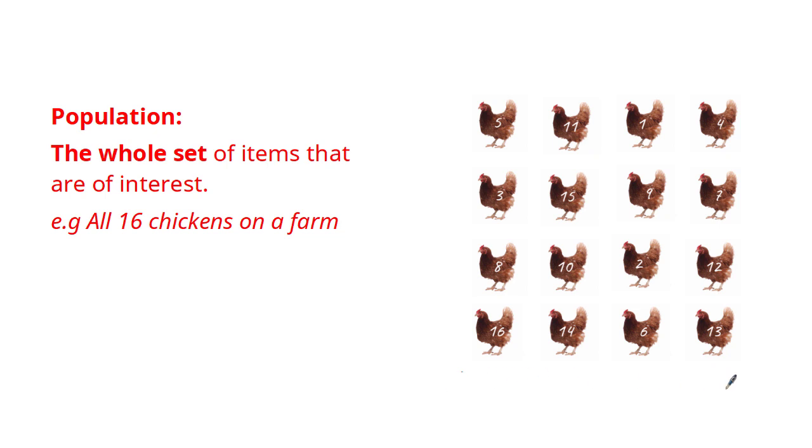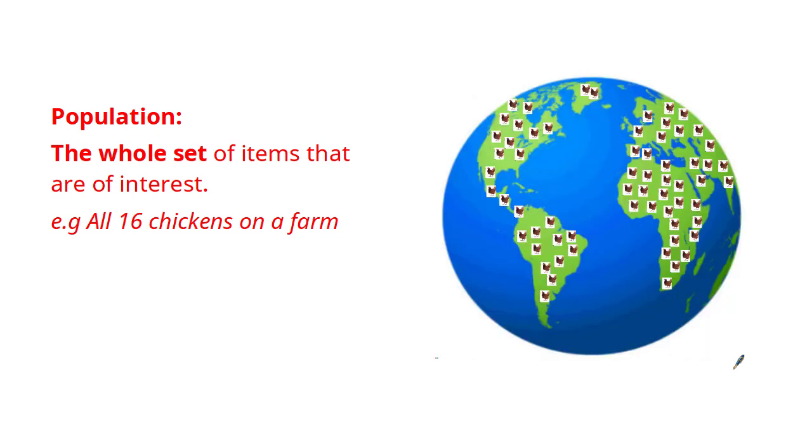The population size in this example is 16 because there are 16 chickens, but in reality population sizes are much larger. For example, in a scenario where we're looking to understand the characteristics of all the chickens in the world, we need to have efficient methods of doing this. So in the next few slides we're going to go through two methods that we use to collect data to give us information about our population.